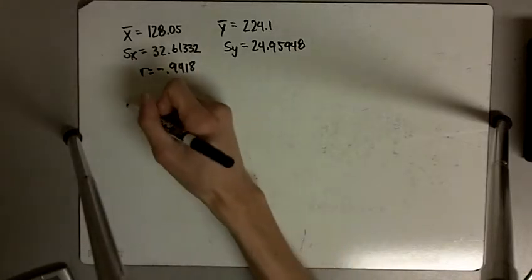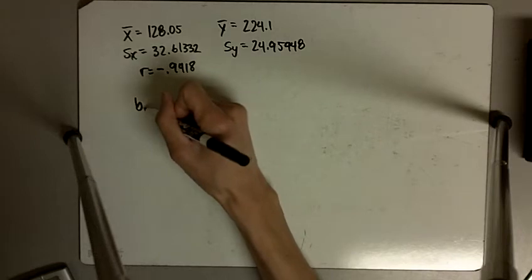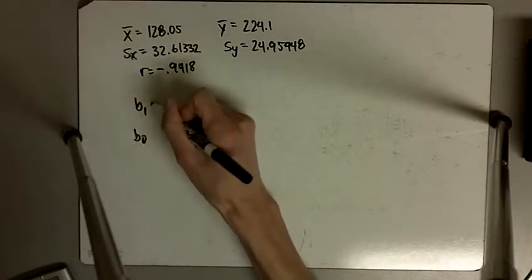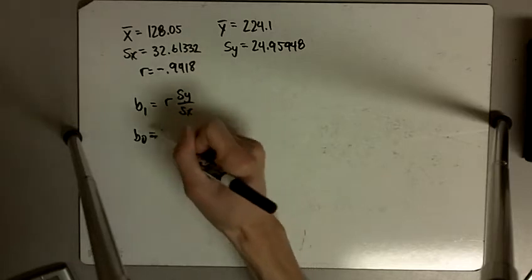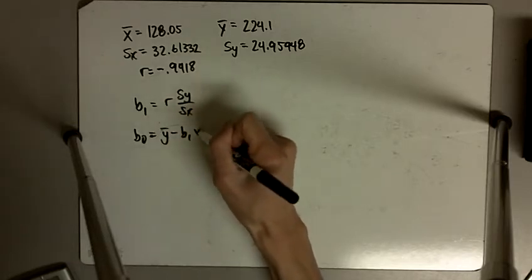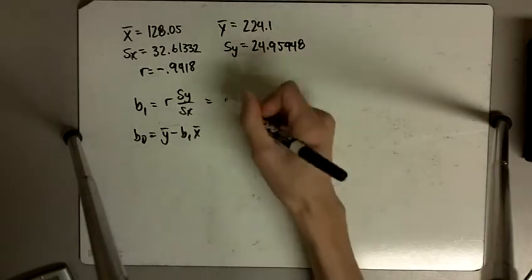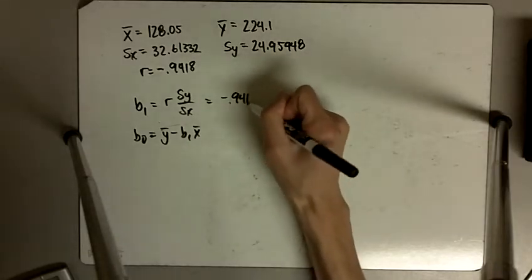Okay, so the fitted regression line, we've got to find B1 and B0. B1 is going to be R S sub Y over S sub X, and B0 is going to be Y bar minus B1 times X bar. So that's just a matter of plugging in the numbers that we have.